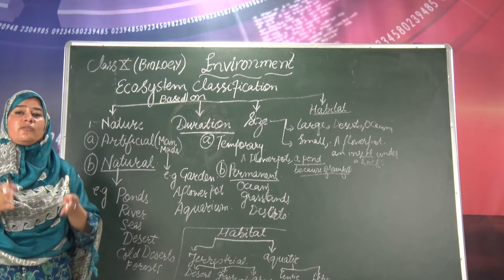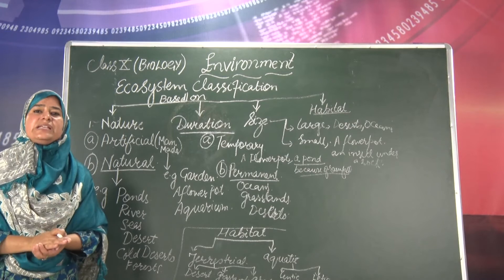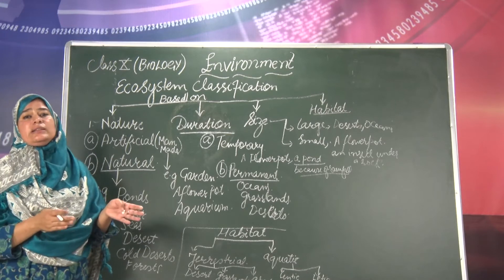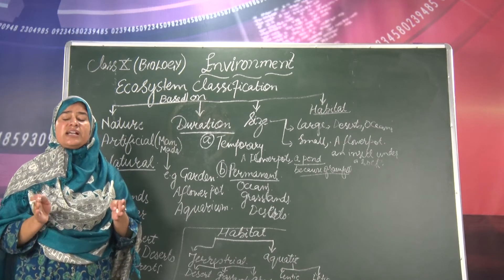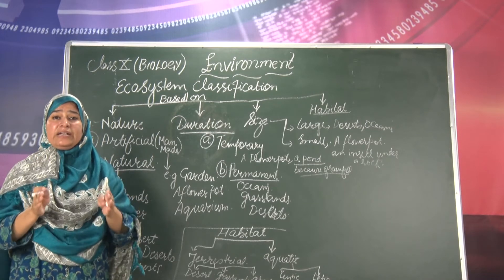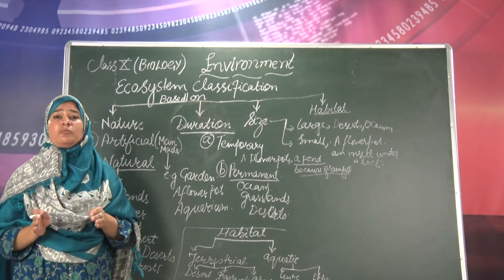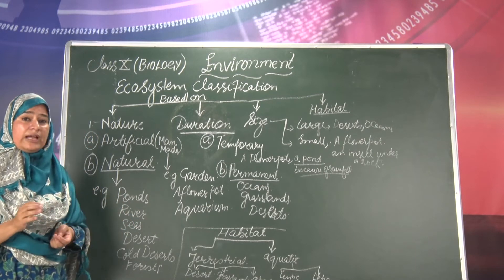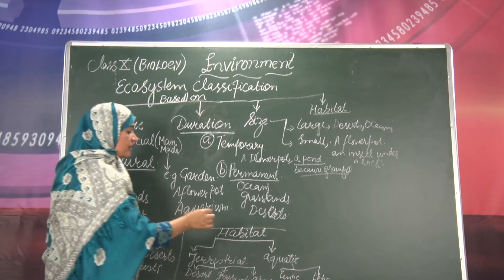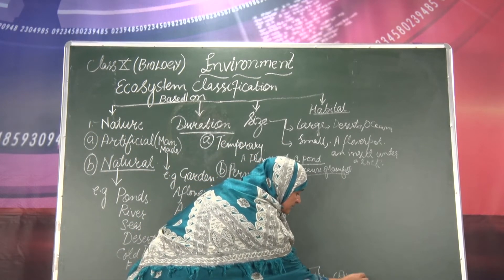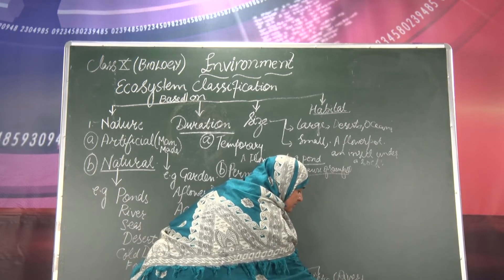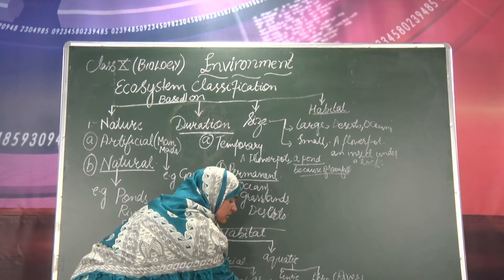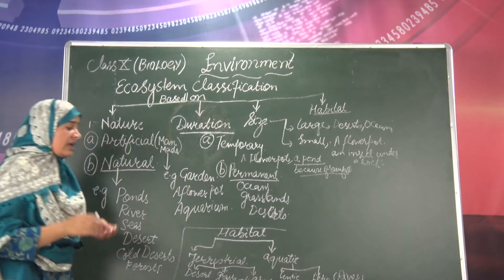Under the aquatic category, it can be lentic or lotic. Lentic means water that is stagnant or stopped — water that does not flow, staying in one place, like a pond. Lotic means flowing water, like rivers, streams, and waterfalls. Lakes and ponds are lentic, staying in one place, while rivers and streams are lotic.